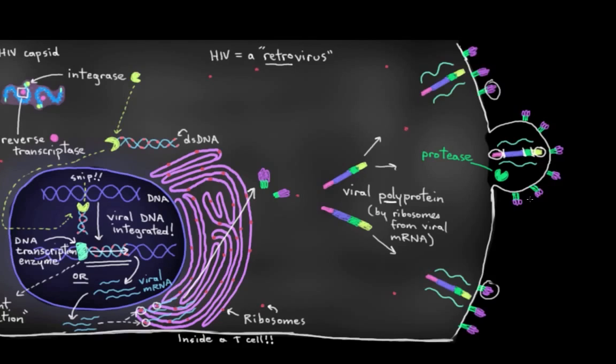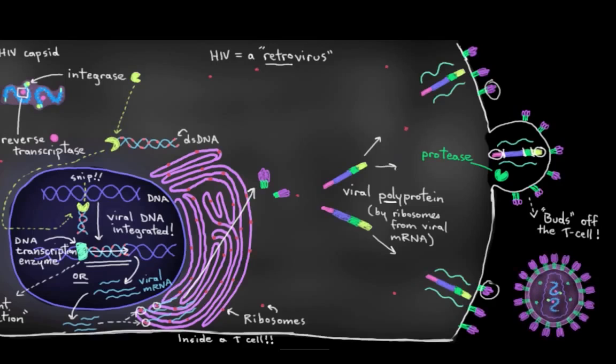So, the protease starts cutting things up. And while it's doing its slicing and dicing, these components here together, they all start to bud off the T-cell as a new virion. And shortly after it buds off, the protease is finished cleaving this long protein up. So, this is now a fully mature HIV particle. Now that it's used this T-cell to be made, it's ready to go on and infect other cells. Particularly, of course, T-helper cells.